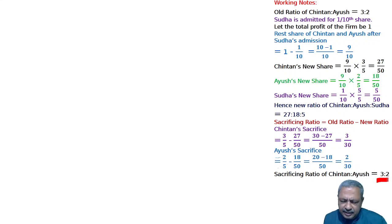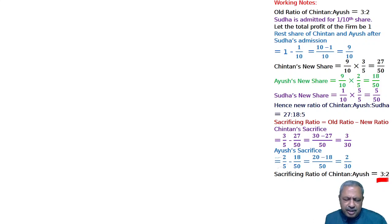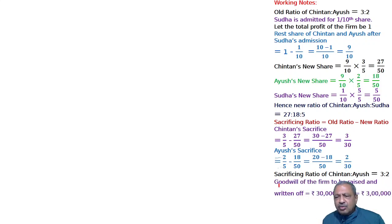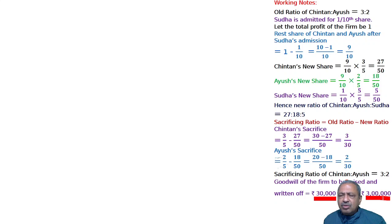Now let's read the question. Shudha brings 40,000 as premium for goodwill out of his share of 70,000. So from 70,000, Shudha paid 40,000, meaning 30,000 was not paid. What was not paid, we will raise as goodwill. The goodwill of the firm is to be raised. For Shudha's 30,000 unpaid share, do the inverse multiplication: 3 lakh. Raise 3 lakh as goodwill.